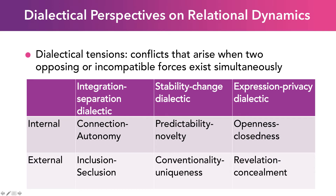Another dialectical tension is the stability-change dialectic: how much do things stay the same versus how much are they different? Within the relationship, one person might like to do things the same way while another wants something new and novel. For example, I like to do the same thing on vacation every year, and my kids always wanted to do something different — that was predictability versus novelty. Externally, this becomes conventionality versus uniqueness, where the couple wants to do their own thing but the outside world expects more conventional behavior.